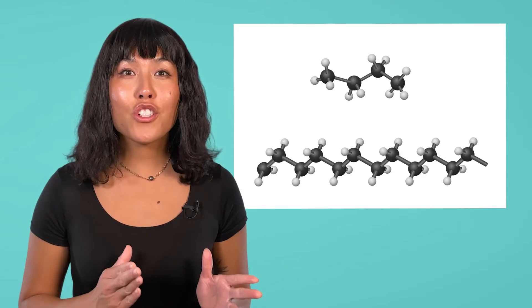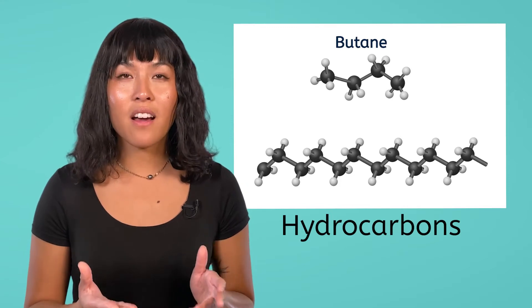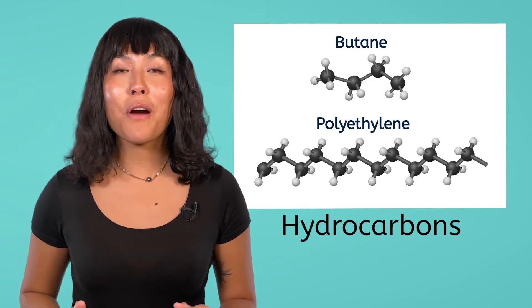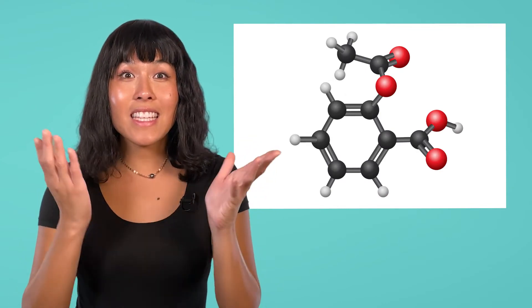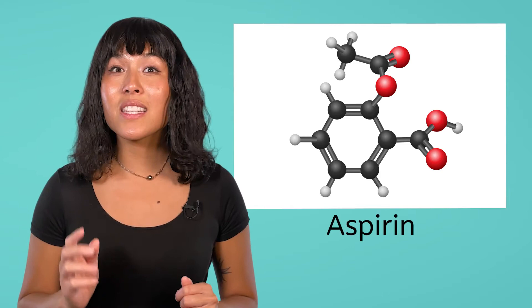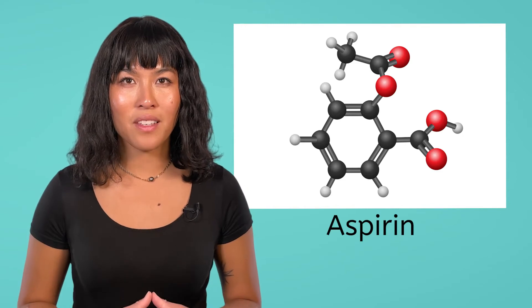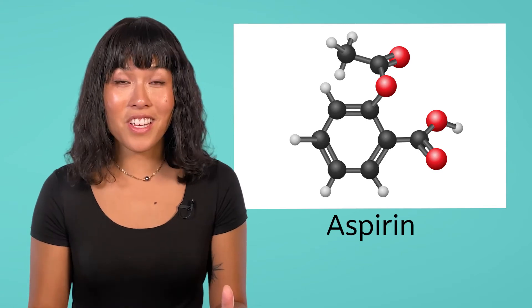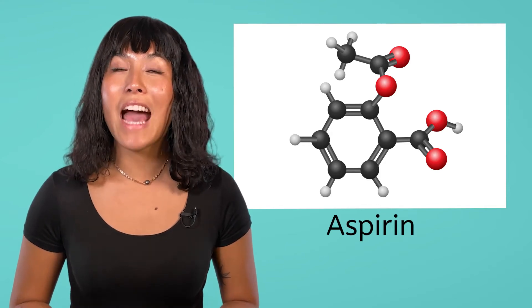Carbon can form chains surrounded by hydrogen atoms, which are called hydrocarbons. Some hydrocarbons are short, like butane, a fossil fuel. Others are very long, like polyethylene, a common type of plastic. Carbon atoms can even form rings and branches, like this aspirin molecule. This molecule is not considered a hydrocarbon because it contains more than just carbon and hydrogen atoms. Can you tell what additional element is present?